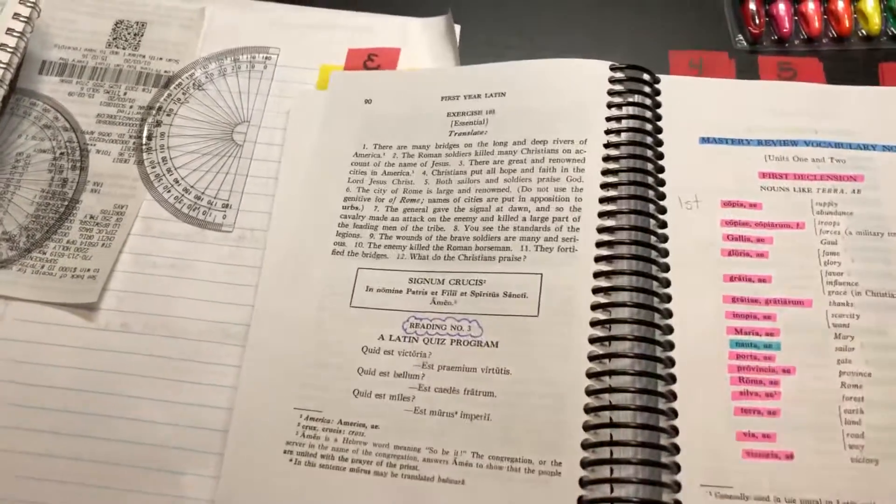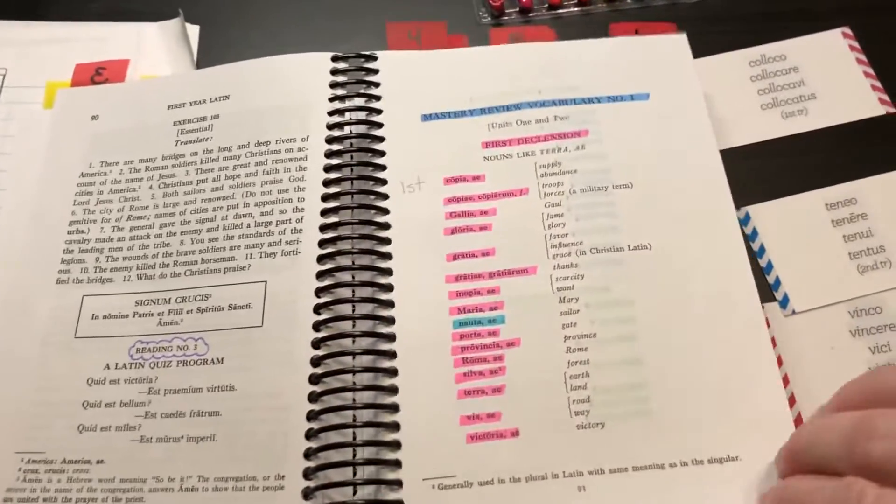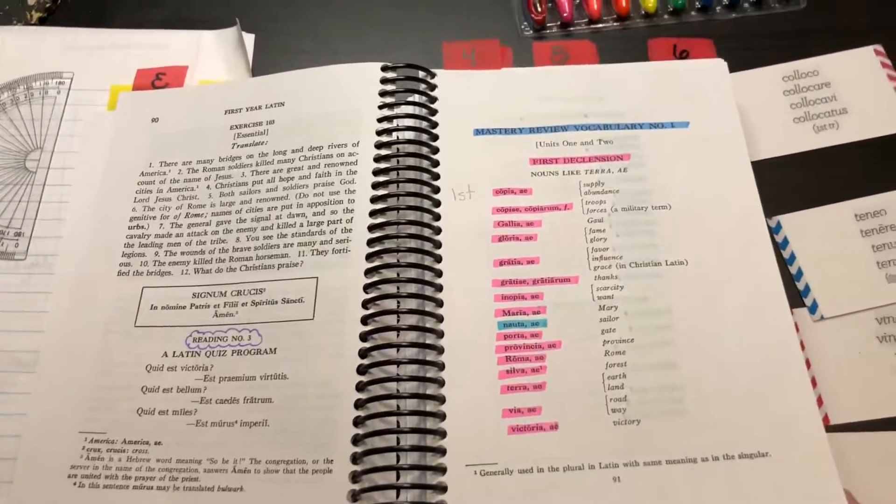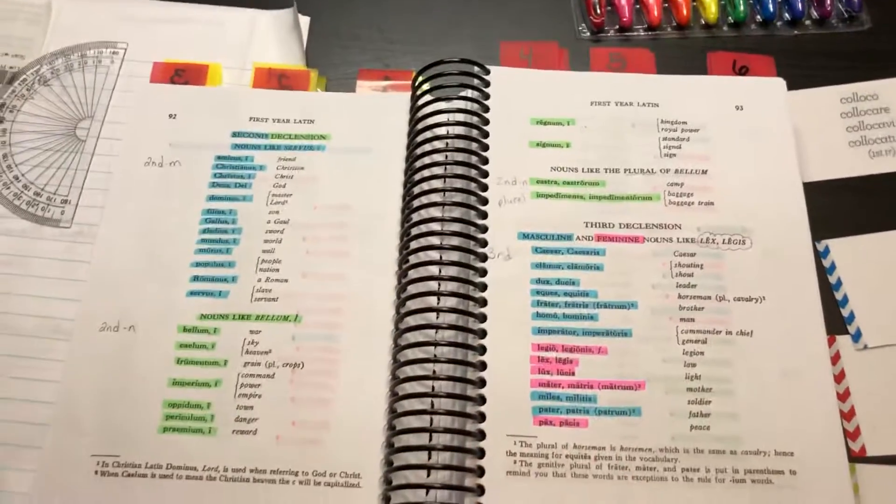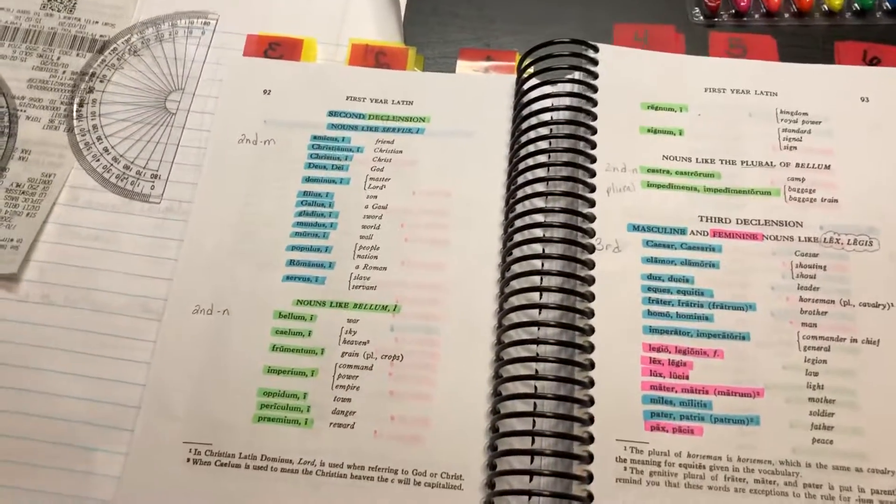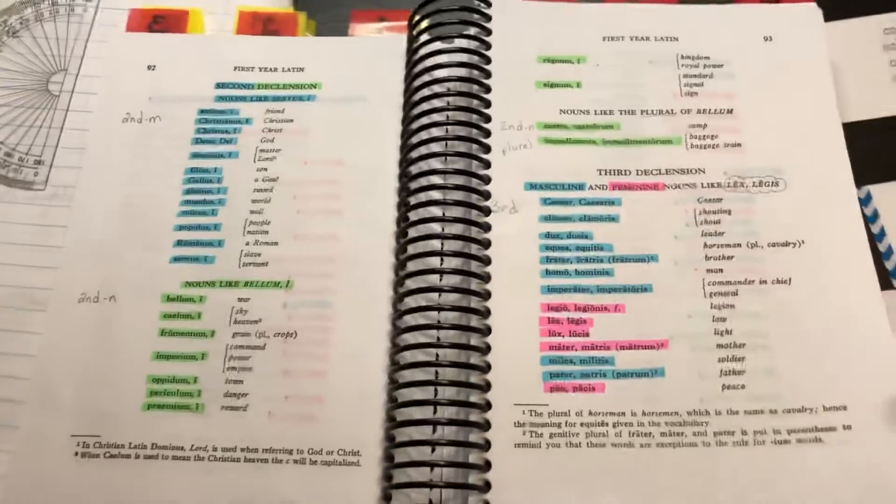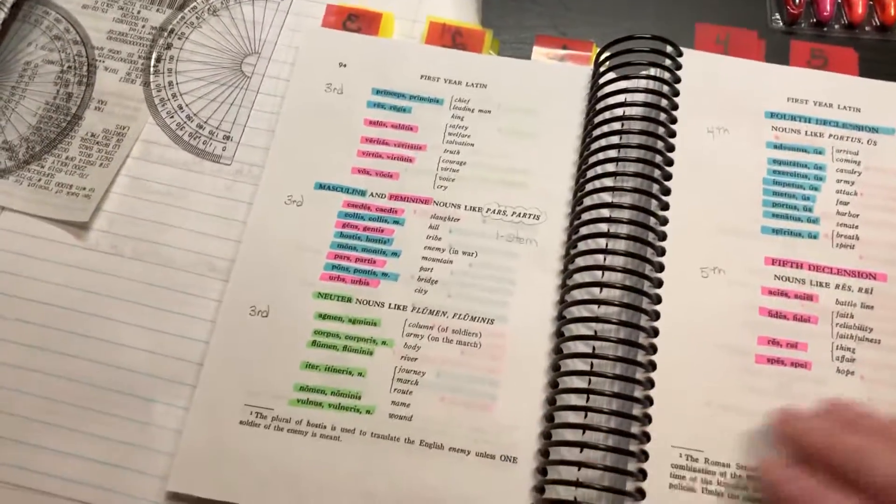I have everything highlighted there as well. First declension is mostly feminine, and that helps me to see at a glance what declension I'm in. Second declension is masculine and neuter, and then third declension is kind of all over the place. I have those marked up, and then the other parts of speech are here as well.